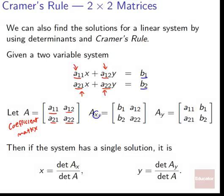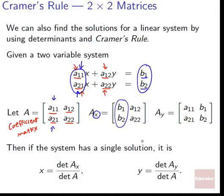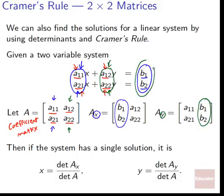Similarly, Ay is formed by swapping the y-column of A with the constants column. So Ax is just like A except it has the constant column replacing the x column, and Ay has the constant column replacing the y column.